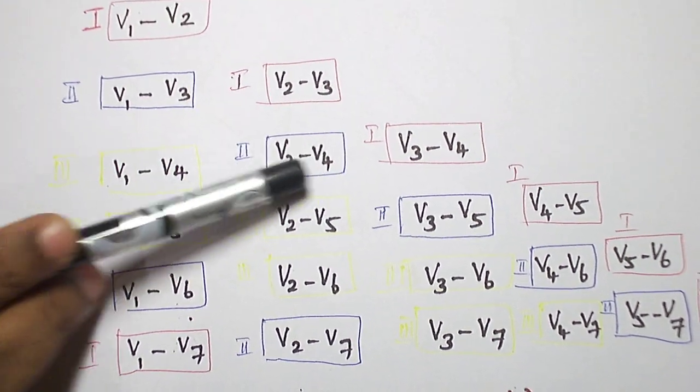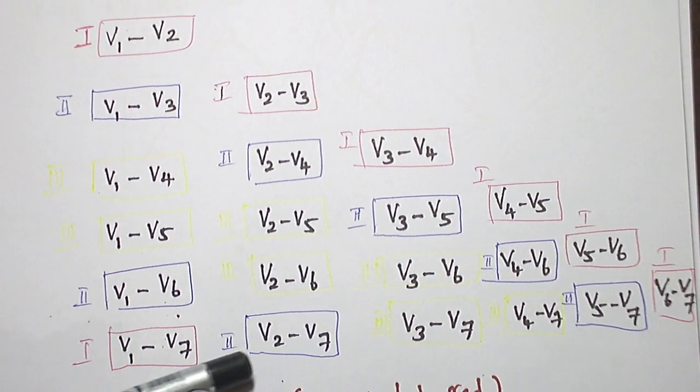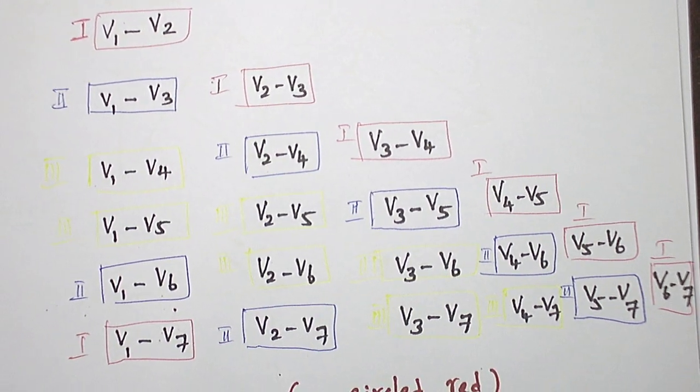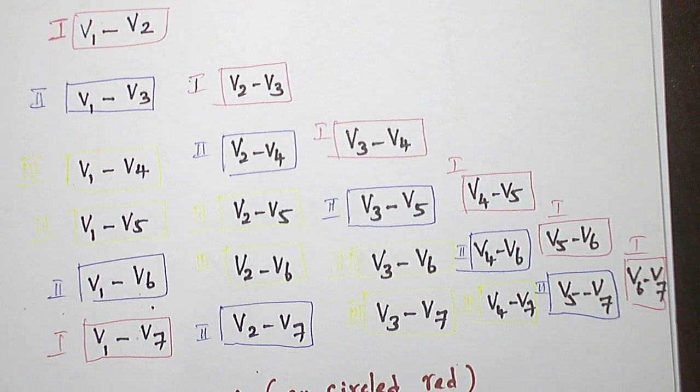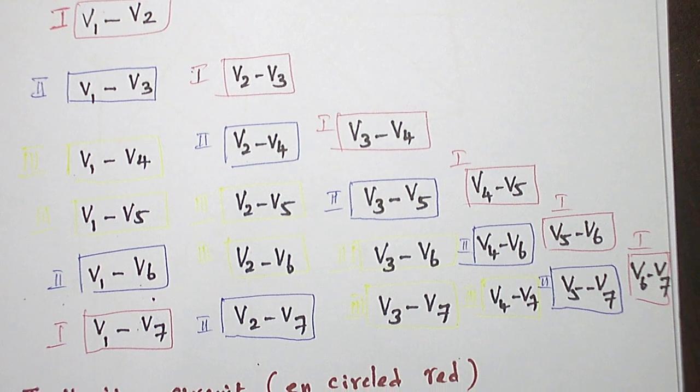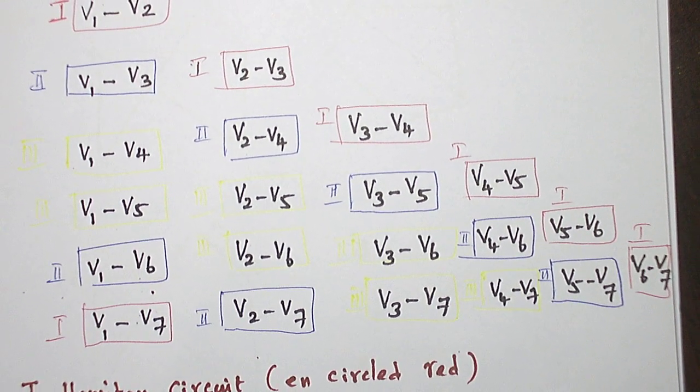Similarly, V2 to V3, V2 to V4, V2 to V5, V2 to V6, V2 to V7. Likewise, I write all the 21 edges of the graph K7, complete graph on seven vertices.